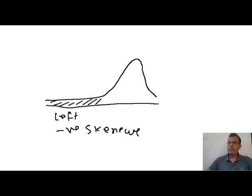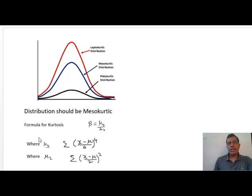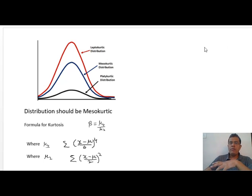Another property is that your distribution should be mesokurtic. This blue graph indicates a mesokurtic distribution — there should not be a sudden peak. The red graph shows a sudden peak, making it leptokurtic. The formula for calculating kurtosis is beta equals mu4 divided by mu2 squared, where mu4 is the fourth central moment and mu2 is the second central moment. If beta is around 3 the distribution is mesokurtic; if more than 3 it is leptokurtic; if less than 3 it is platykurtic. Kurtosis can never be negative — its least value is 0 with no upper limit.